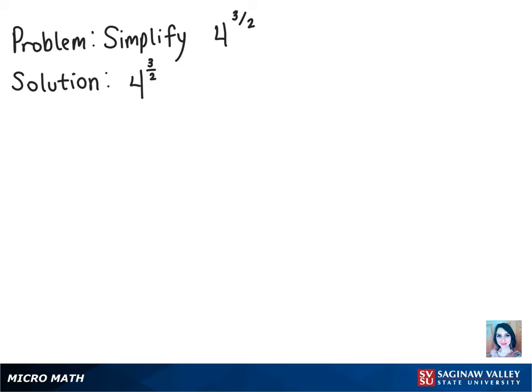To simplify this problem, we can first break up the fractional exponent, so we can rewrite it as 4 to the 1/2 power cubed. And remember that the 1/2 power means the square root, so we have the square root of 4 cubed.